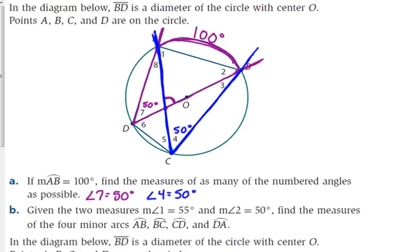Those are the only two inscribed angles, but BD is a diameter. Let's look at the arcs. If BD is a diameter, it cuts the circle in half. We know arc from A to B is 100 degrees — that's one half. The other half of the circle is 180, so the arc from A to B on the other side is 80 degrees. This picture isn't to scale, but we'll go with it.